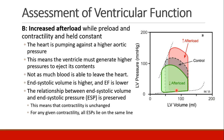What happens if we just change afterload, keeping preload and contractility constant? Increased afterload means pumping against a higher aortic pressure — either from a pinched aortic artery, aortic valve obstruction, or similar. The ventricle has to generate higher pressure to eject its contents. Starting with the same amount of blood, the heart now has to generate more pressure than before to eject that blood. As a result, not as much blood can leave the heart, so our end systolic volume is actually a little bit higher and our ejection fraction goes down.